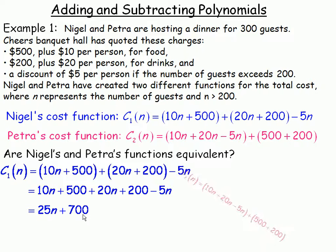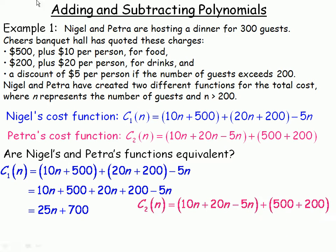Now let's take a look at Petra's. Since we're adding these polynomials, we'll remove the brackets and all five terms will keep their identical signs. $10N and $20N is $30N minus $5N again is $25N. And of course the $500 and $200 add to $700. So simplifying the two expressions, we get exactly the same functions. $25N plus $700.